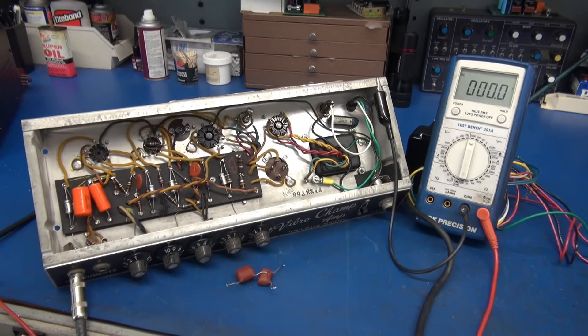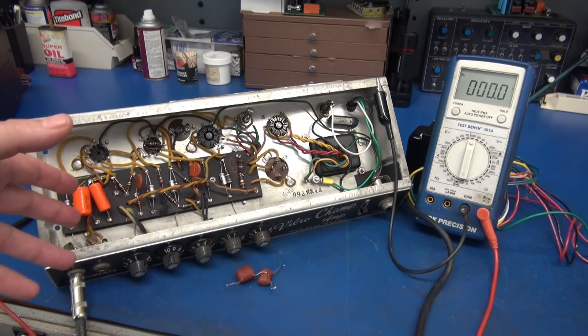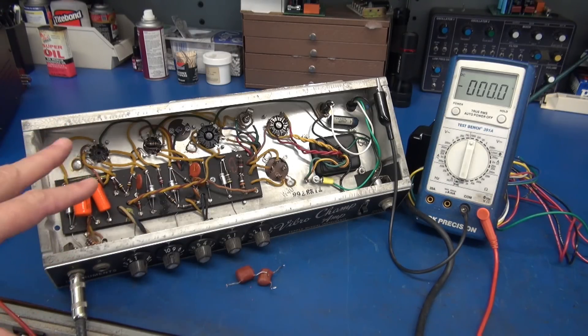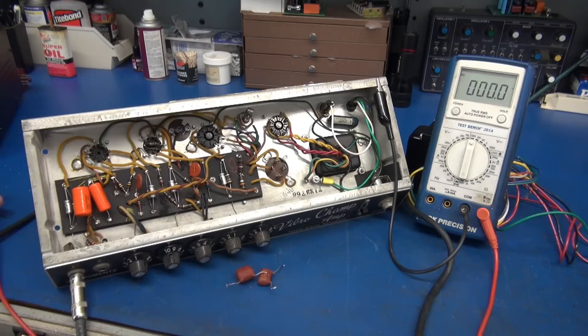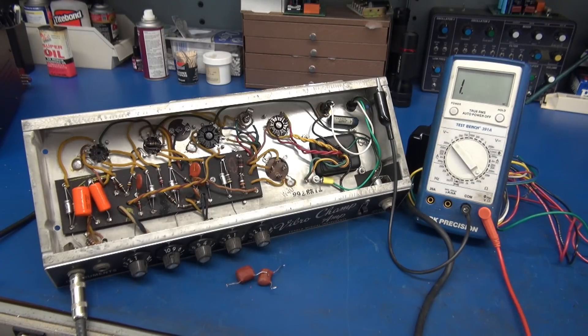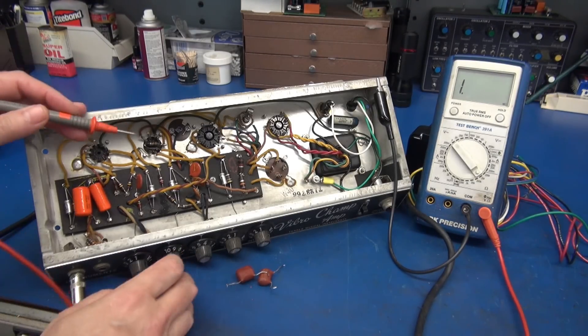How can the volume pot be affecting plate voltage? That is very odd. Let's check that pot. I'm wondering if it's defective, maybe shorting out and pulling our plate voltage down and causing this odd DC voltage reaction. Wow, this is a good one.